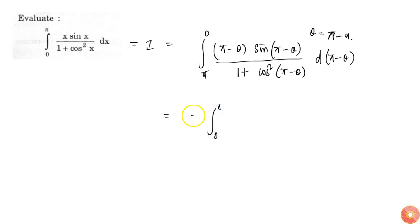If I write 0 to π, this becomes minus 1 into π minus θ into simply sin θ into minus dθ. So minus 1, minus 1 cancels and this becomes 1 plus. Since cos square is there, negative into negative becomes positive, so this becomes cos square θ.